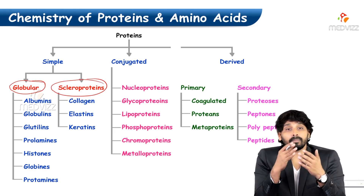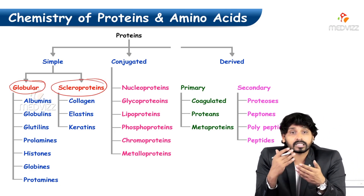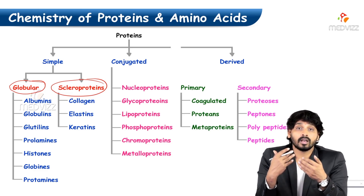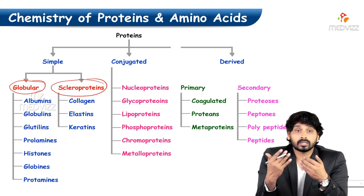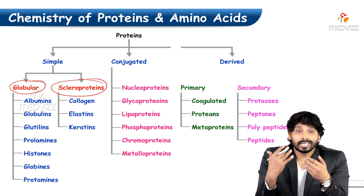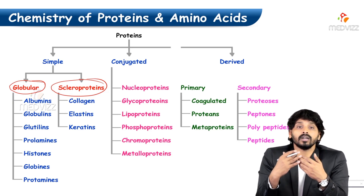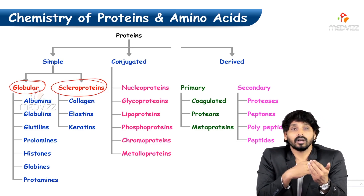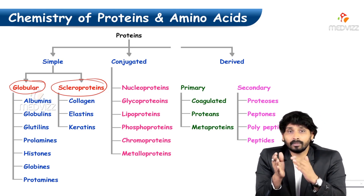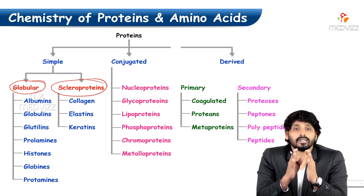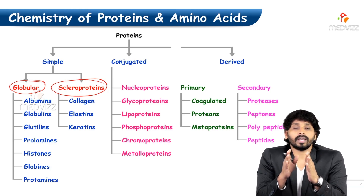Globular protein examples include albumins, globulins, glutelins, prolamines, histones, globins, and protamines. When talking about scleroproteins: collagen, elastin, and keratins.